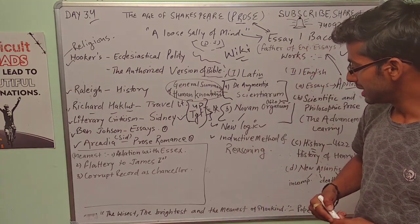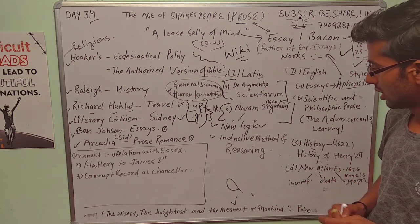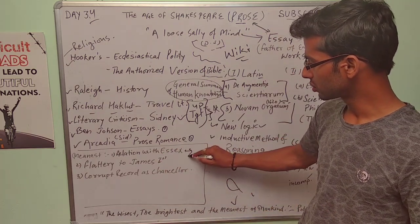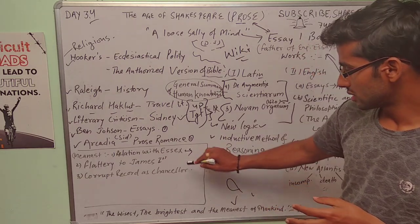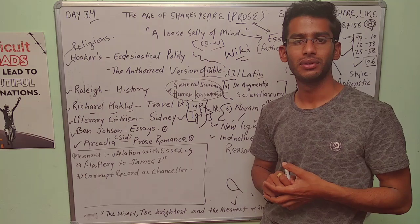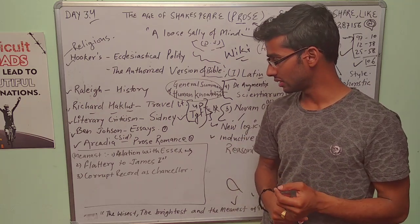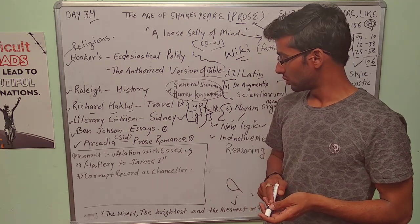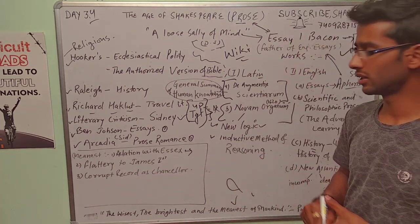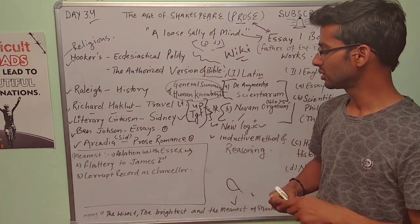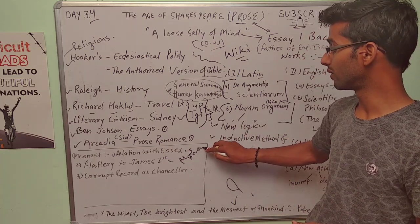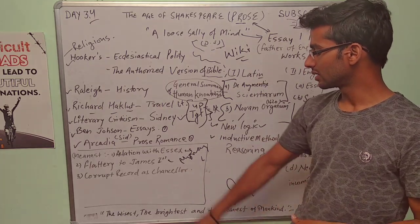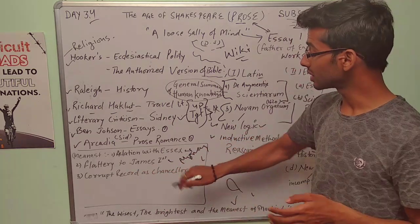And the last one is meanest. Why did people call him meanest? There were some reasons. His relation with Essex: Essex was his friend, and he dissed him just because of the queen. Finally, he got executed and Bacon did not help him. That's why he was meanest. Next, flattery to James I. He was a good flatterer. He wanted more money—he was a money monger. He wanted more money, that's why he lost his friend.